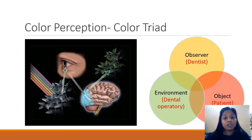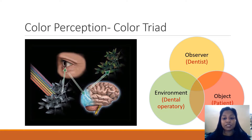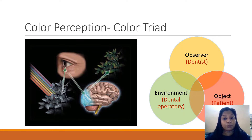Color perception, or the color triad, is shown as a Venn diagram denoting three important components of color: the observer, the object, and the environment. The observer refers to the dentist, the object refers to the patient, and the environment refers to the dental operatory. In shade determination, understanding the color triad is crucial. The light source refers to the fact that the surface color appearance of an object depends on the quality of the color illumination.